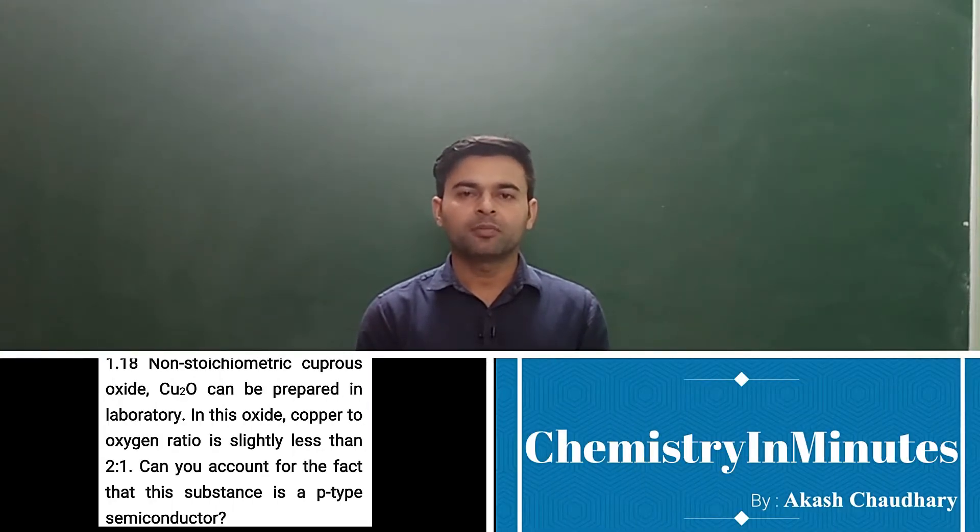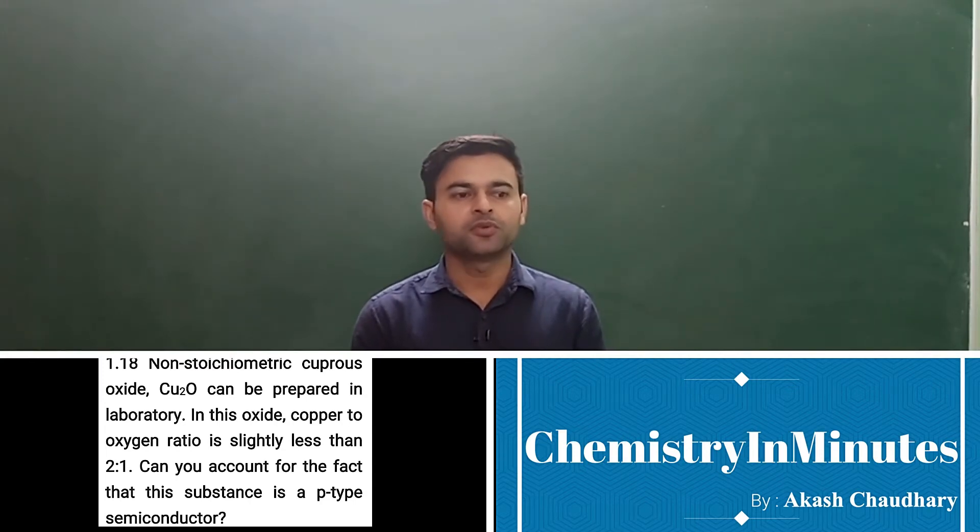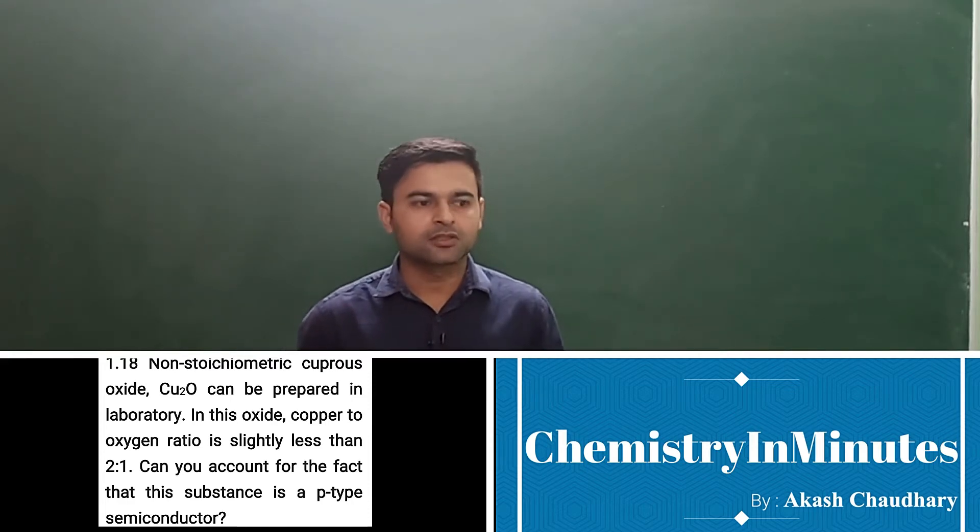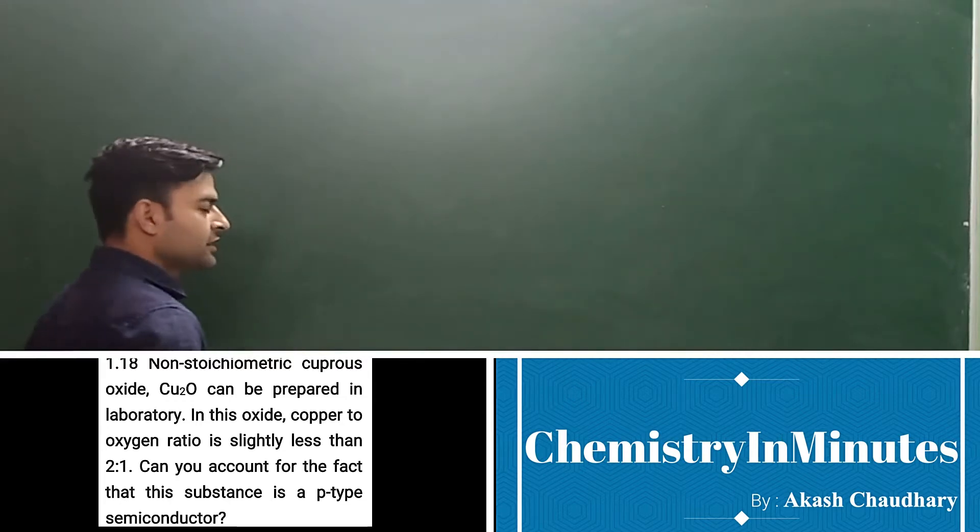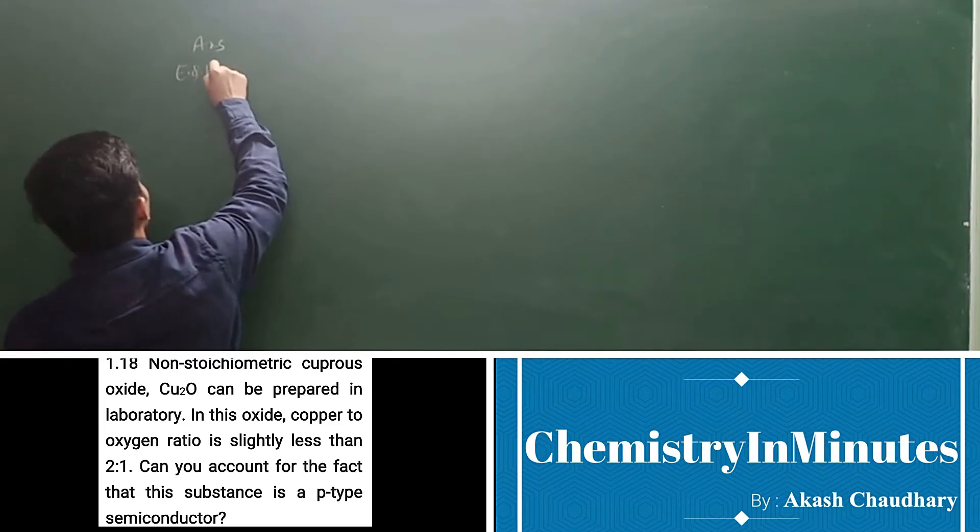Hello my dear students, the question now appearing on your screen is exercise question 1.18. The question is: Non-stoichiometric cuprous oxide Cu2O can be prepared in laboratory. In this oxide, copper to oxygen ratio is slightly less than 2:1. Can you account for the fact that this substance is a p-type semiconductor? Question में हमको बता रखा है कि non-stoichiometric cuprous oxide Cu2O laboratory में form किया जा रहा है जिसमें copper to oxygen ratio जो है वो 2:1 से slightly less है। अब यह जो substance है it is p-type semiconductor तो यह कैसे है यह हमें बताना है। Let's write the answer to exercise question 1.18.